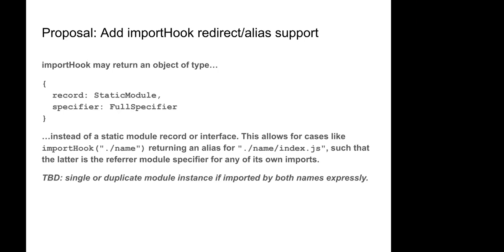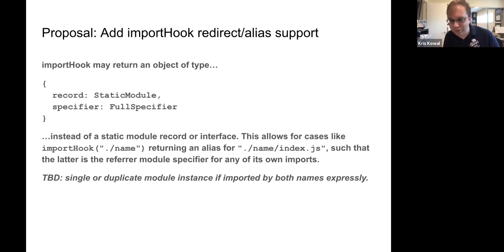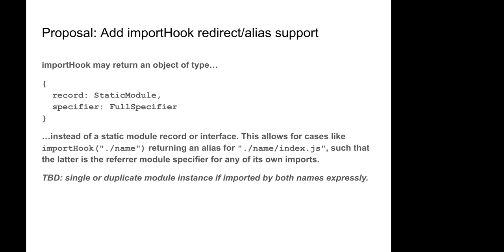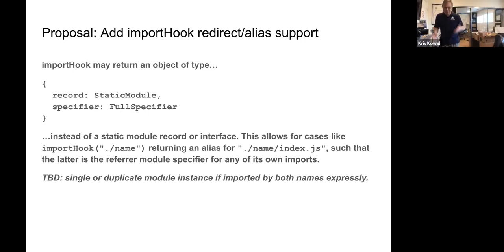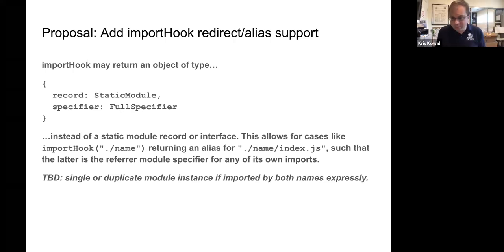When you provide an absolute URL, Node does real-pathing by default. Real path is I/O so it should be async, but it is currently not async.